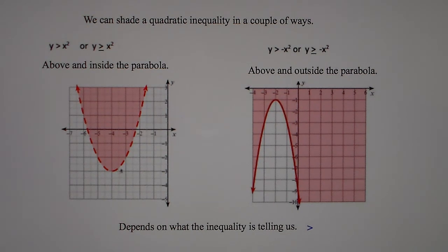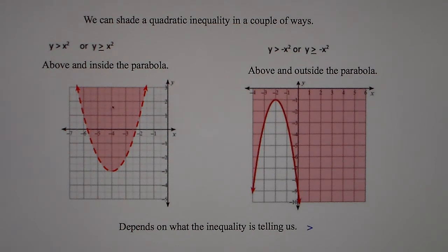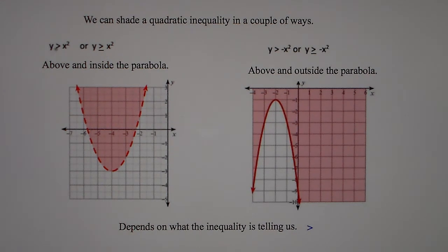When will we shade inside this parabola and above? Anytime there's y is greater than x squared, or y is greater than a number times x squared, or y is greater than or equal to a number times x squared — for example, y > 2x², y > 5x², or y > 20x² + 6x − 2 — we're going to shade inside this parabola and above.